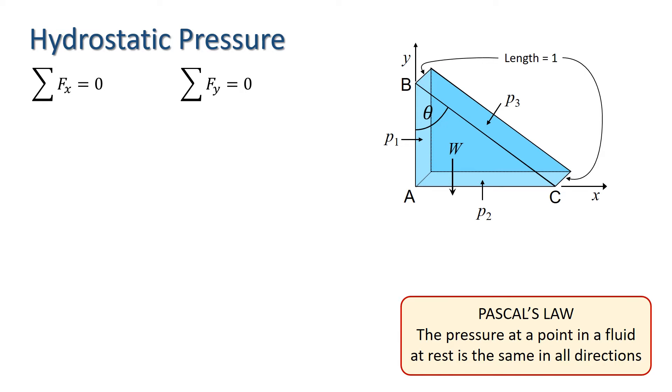Let's consider first the horizontal forces. We have P1 times AB times one, which is the force on the left hand face, and minus P3 times BC times one, which is the force on the diagonal face, times cos theta, which resolves that force in the horizontal direction.